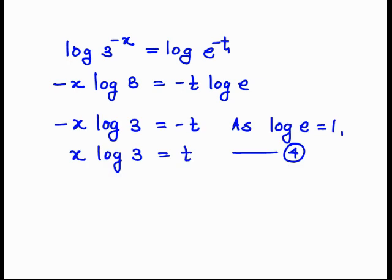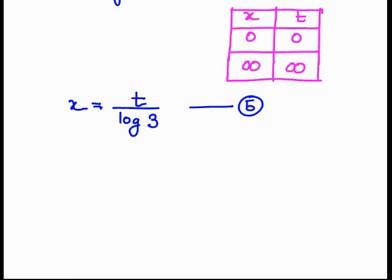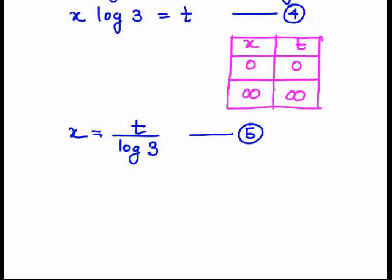Since log e equals 1, we get minus x log 3 equal to minus t, so x log 3 is equal to t. Now we find the limits: if x equals 0, we get t equal to 0; and if x equals infinity, we get t equal to infinity. From x log 3 equal to t, we get x equal to t upon log 3.